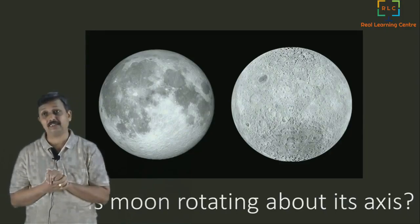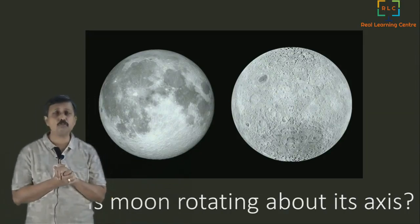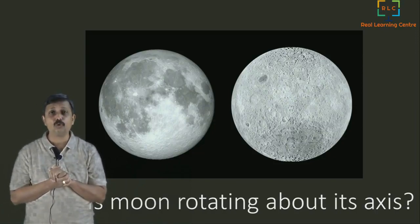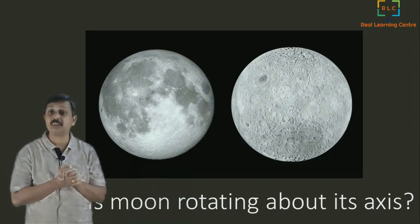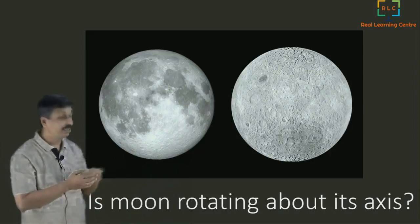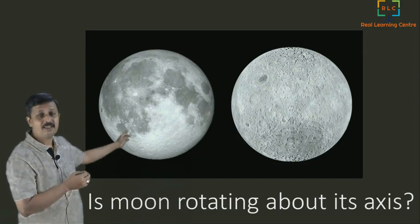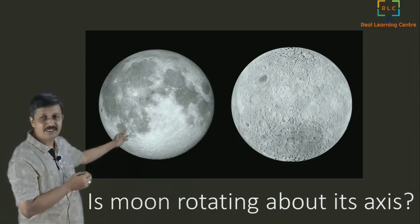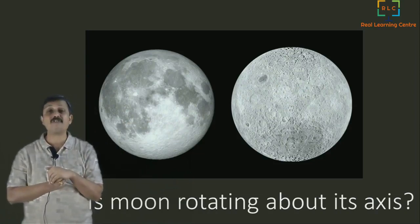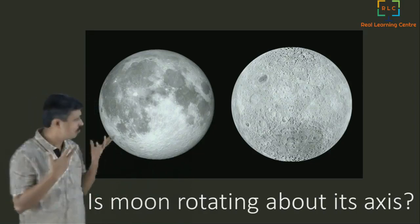Is the moon at all rotating about its axis? I'm asking this question mainly because somebody told me that the moon we see is not the entire moon — we only see one side of the moon, not the other side. Somebody has gone to the other side and taken a photograph. The side you normally see is on your left, and the other side looks completely different, and we have never seen it. From this, can we conclude something?